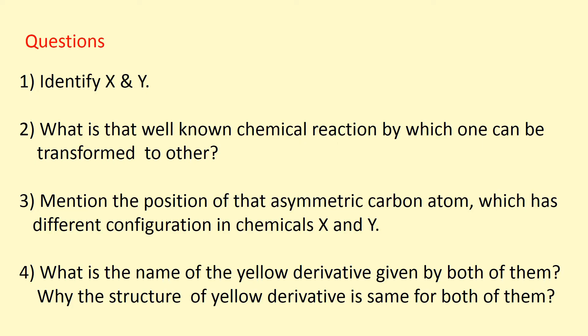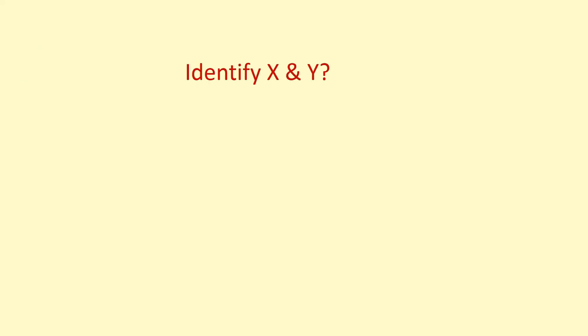The questions are: the primary question is identify X and Y. Number 2, what is that well-known chemical reaction by which one can be transformed to the other? Number 3, mention the position of that asymmetric carbon atom which has different configuration in chemicals X and Y. Number 4, what is the name of the yellow derivative given by both of them? Why is the structure of the yellow derivative the same for both of them? Now guess the answer for the primary question.